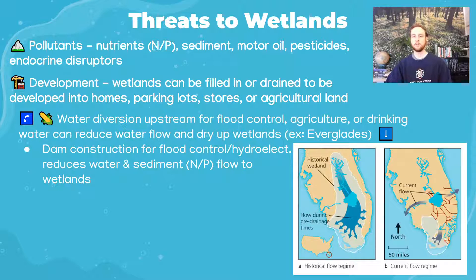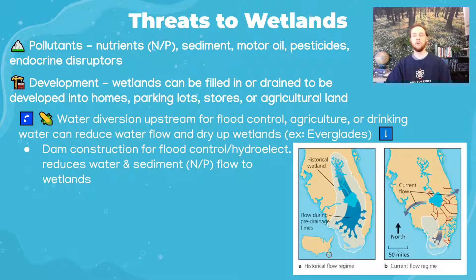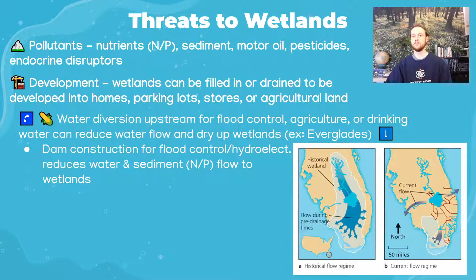Hydroelectric power is another concern, where dams block rivers and dramatically decrease not only downstream water flow but also the flow of nutrients. Sediment and nutrients vital for wetland plants get trapped behind the dam, drastically altering the soil fertility of those downstream wetland habitats.